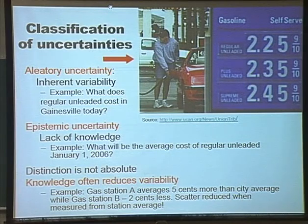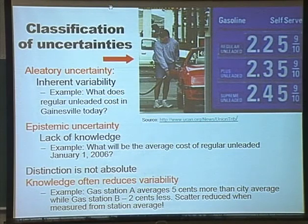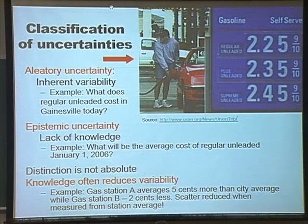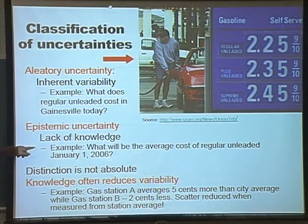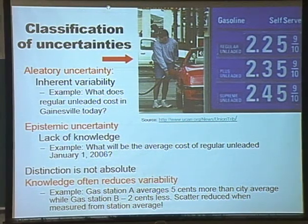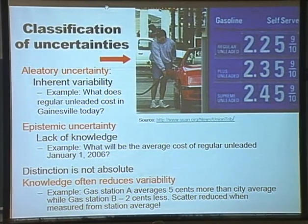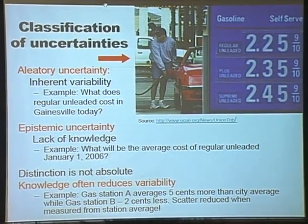The first one — you can get the information — but the second one you cannot get even if you want to. Actually, you can call Miami and get the information. So one important distinction is: in the epistemic case, you can obtain a precise answer. The reason you give a range is because you don't know what the exact answer is.